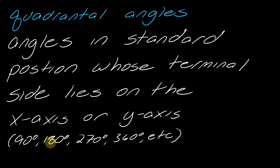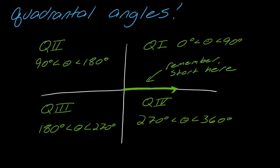So quadrantal angles create angles like 90 degrees, 180 degrees, 270 degrees, and so on. I think it's easiest to review this using some pictures.